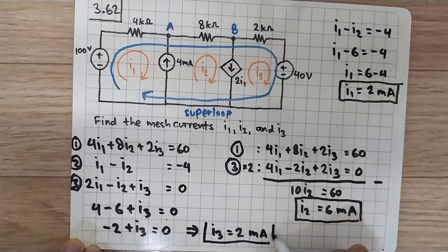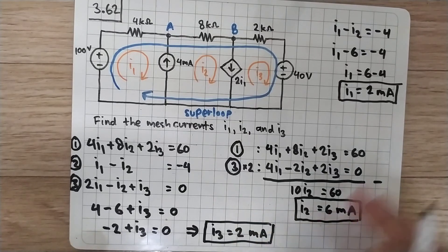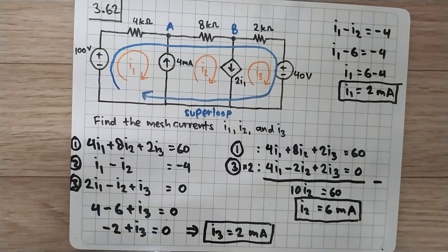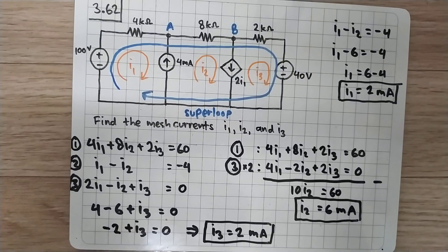So we have all the mesh currents: i1 = 2 mA, i2 = 6 mA, and i3 = 2 milliamperes. Hopefully there are no mistakes in the calculation. Thank you for watching, and don't forget to subscribe to my channel.